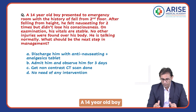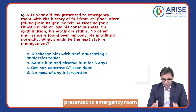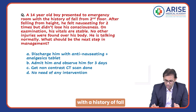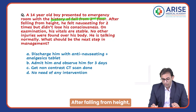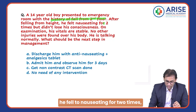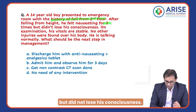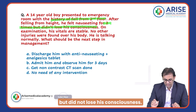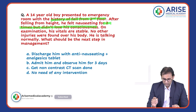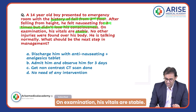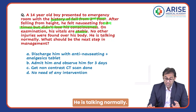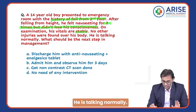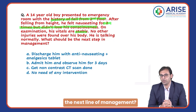A 14-year-old boy presented to the emergency room with a history of fall from the second floor. After falling from height, he felt nauseated two times but did not lose his consciousness. On examination, his vitals are stable, no other injuries were found over his body, and he is talking normally. What should be the next line of management?